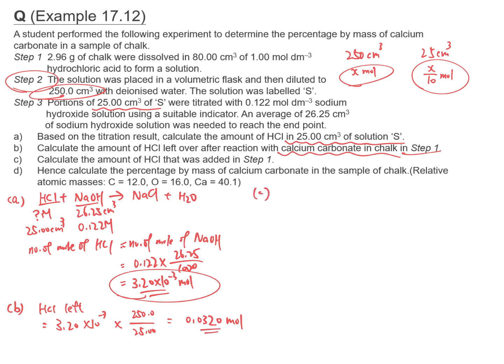Question C: calculate the amount of HCl that was added in step 1. This is easy — that is the total, which is 1.00 times 80.00 divided by 1000, equals 0.0800 moles.